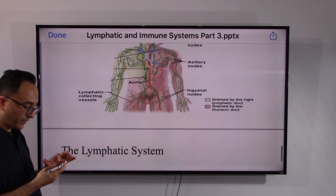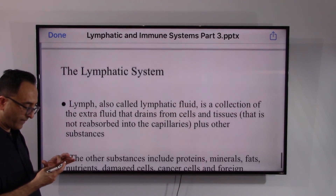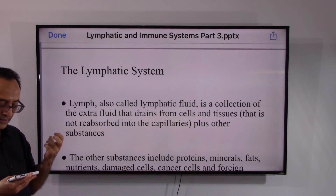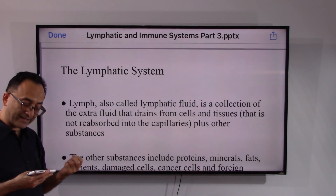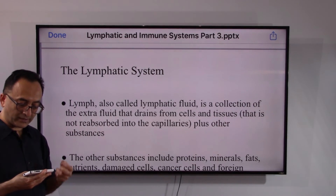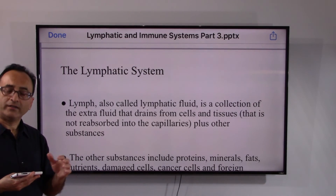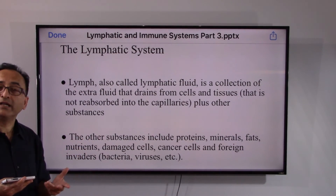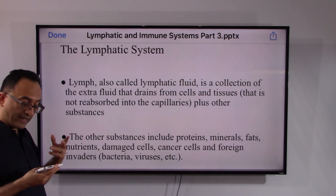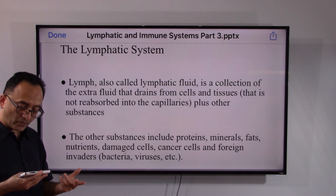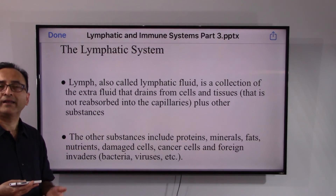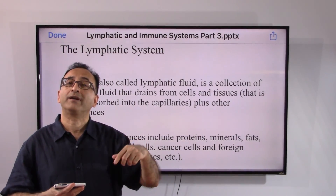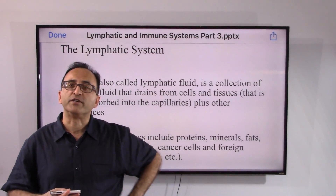Lymph is a lymphatic fluid — a collection of extra fluid that drains from cells and tissues and is not reabsorbed into the capillaries, plus other substances including proteins, minerals, nutrients, damaged cells, cancer cells, and foreign invaders like viruses and bacteria. Try to digest these details — I'll be back soon to cover another aspect of the lymphatic and immune system. Take care, bye bye.